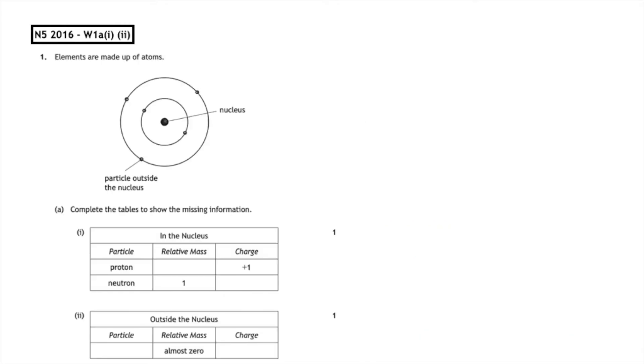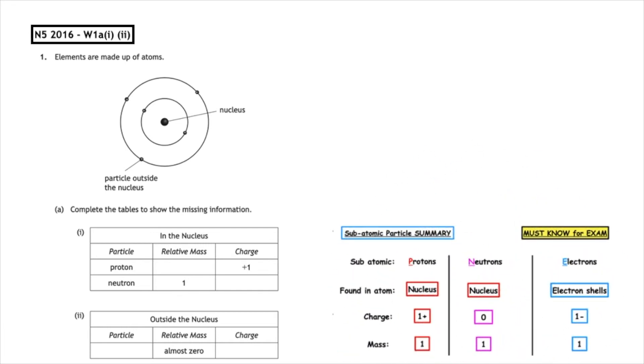This past paper question is from the National 5, 2016, written 1A, part 1 and part 2. Complete the tables to show the missing information. Protons, it's asking you about the mass. Remember the mass is contained within the nucleus, so protons will have a mass of 1. Neutrons are neutral, so have a charge of 0. The only other particle that we haven't looked at, which is found outside the nucleus, are the electrons and electrons have a negative charge, so a value of minus 1.